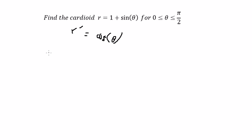Next, we need to use the formula to find the arc length. That should be the integral from zero to π/2 of the square root of r squared plus the first derivative of r squared, dθ.